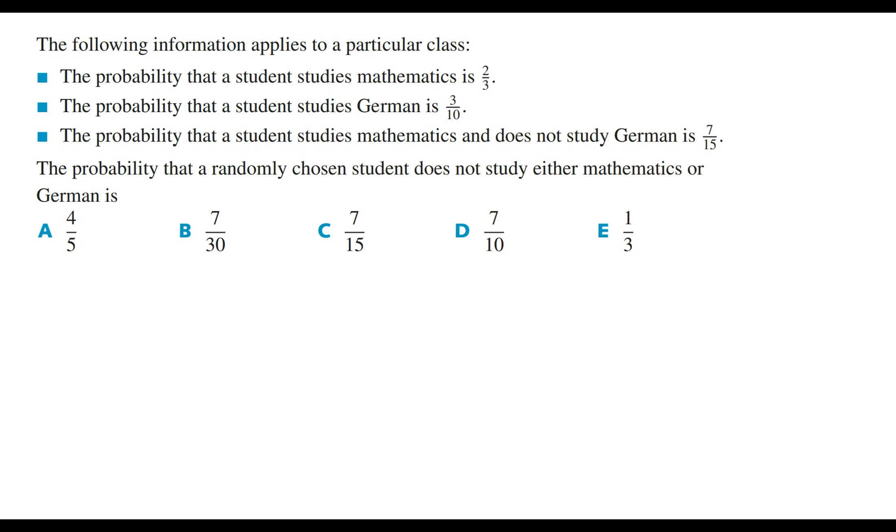Reading this question we've got: the following information applies to a particular class. The probability that a student studies mathematics is 2 on 3. The probability that a student studies German is 3 on 10. The probability that a student studies mathematics and does not study German is 7 on 15. The probability that a randomly chosen student does not study either mathematics or German is...